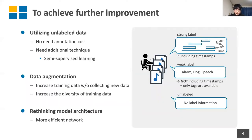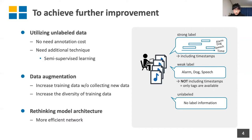Now let's consider how to achieve further improvement. We introduce three kinds of techniques for performance improvement. First, utilizing unlabeled data — unlabeled data is easy to collect because no annotation cost is needed, but it requires additional techniques such as semi-supervised learning. Next, we introduce data augmentation, which increases training data diversity without collecting new data. Finally, we rethink the model architecture for more efficient modeling.